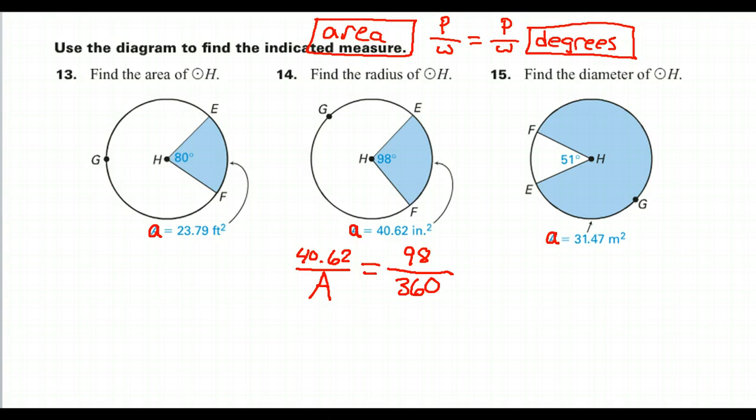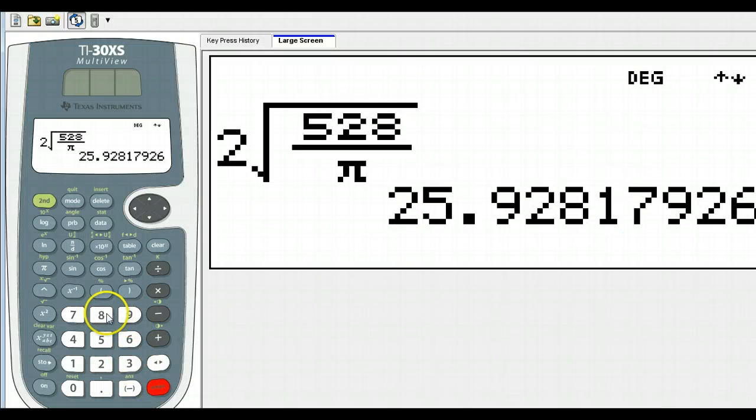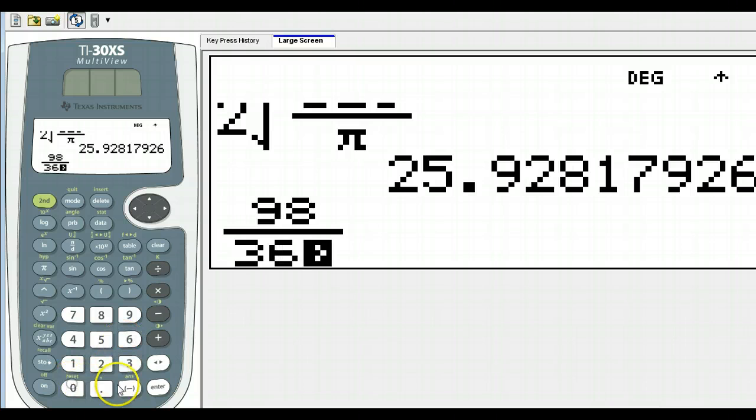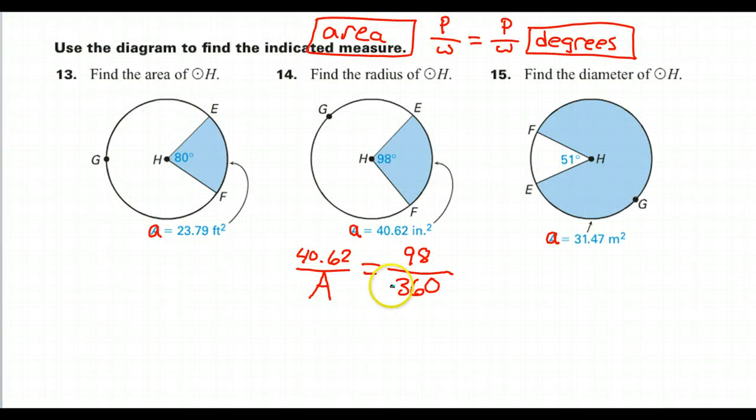98 over 360, let's see if we can reduce that. So 98 over 360. All right, it doesn't reduce a whole lot. 49 over 180. Okay, so I've got this 40.62 over area of the circle equals 49 over 180.